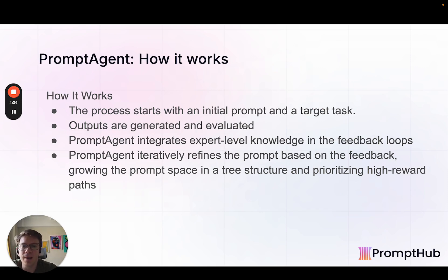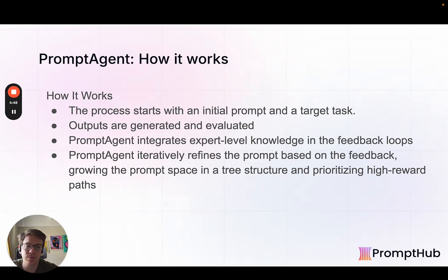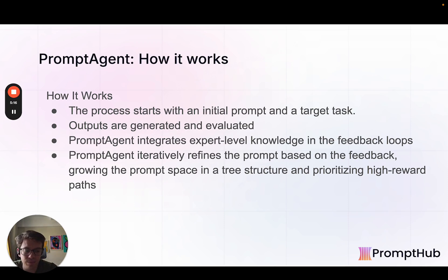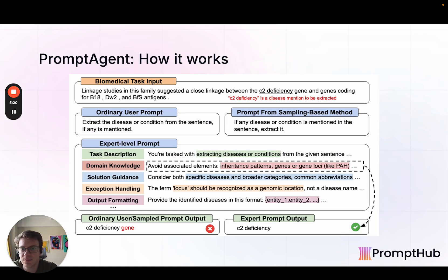Next one is Prompt Agent. It starts with an initial prompt and some kind of target task. A bunch of outputs are generated and evaluated. Prompt Agent is really focused on trying to capture the subject matter expert type knowledge that is so critical in prompt engineering. Similar to the first method, it uses personas and different types of prompting to tap into knowledge like a financial analyst or a medical doctor — people with different types of domain knowledge. It iteratively refines prompts based on that feedback using a tree-like structure, going down high-reward paths and pruning branches that aren't as high reward. Templates and examples are in our blog post.